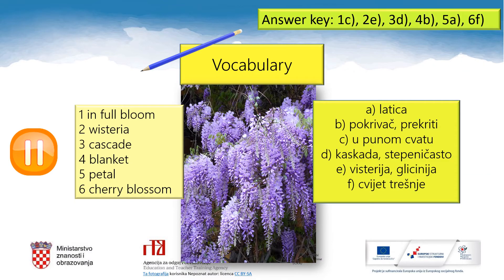And we're back. In full bloom means 'u punom cvatu' — 1C. Wisteria is 'visteria, glicinia' — a type of flower, 'vrsta cvjeta'. Cascade — 'imenica, ali može biti i pridjev: stepeničasto' — 3D. Blanket — 'može biti imenica: pokrivač, ali i glagol: prekriti'. Petal — 'latica' — 5A. And the last one, cherry blossom — 'cvjet trešnje' — 6F. Well done!